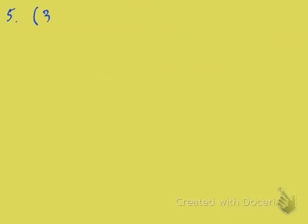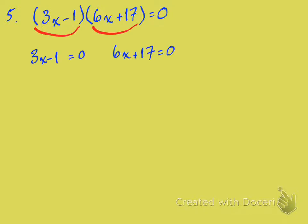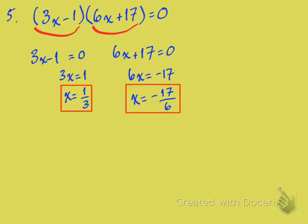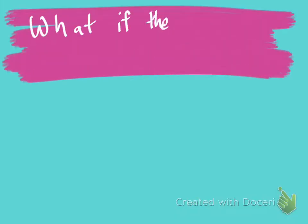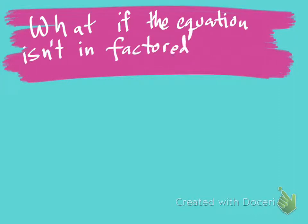Here's a similar one: (3x minus 1) times (6x plus 17) equals zero. Set your factors equal to zero — 3x minus 1 equals zero and 6x plus 17 equals zero — and solve. You get fractional answers, and it's fine to leave them as fractions. All of these equations were presented in factored form, highlighting how nice it is to use the zero product property.